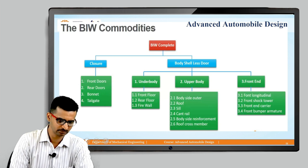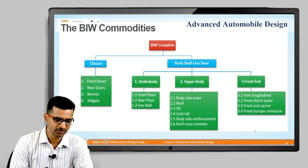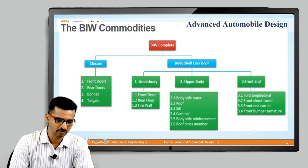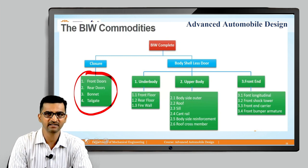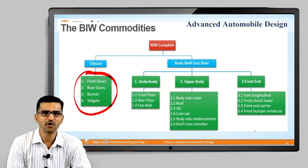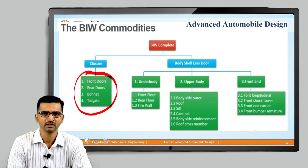Under closures, there are doors — the front, rear, bonnet, and tailgate. All the openable elements, that is the elements which can open and close, are treated under closures.